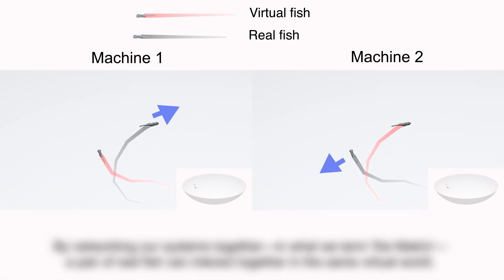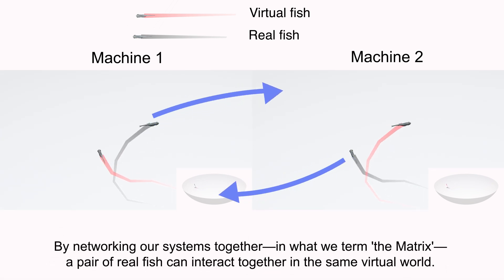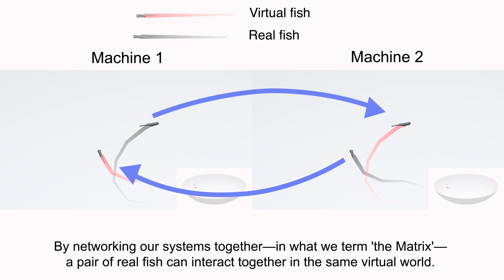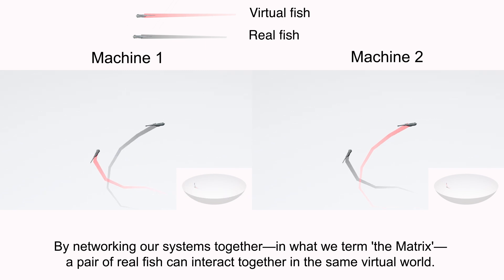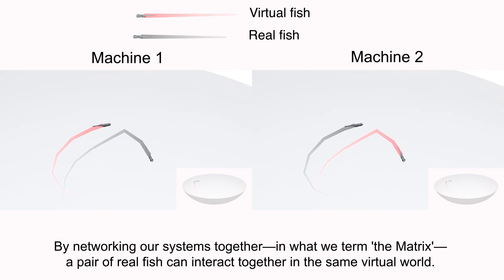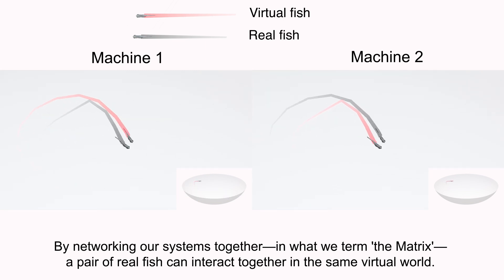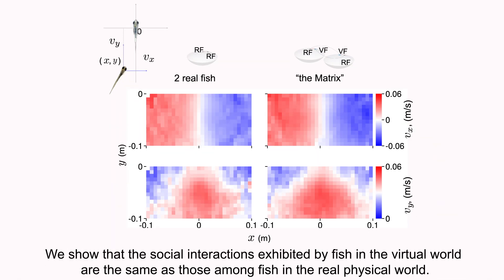By networking our systems together, in what we term the matrix, a pair of real fish can interact together in the same virtual world. We show that the social interactions exhibited by fish in the virtual world are the same as those among fish in the real physical world.